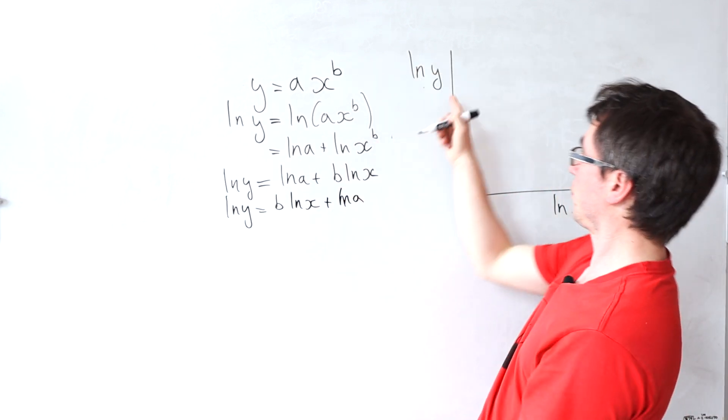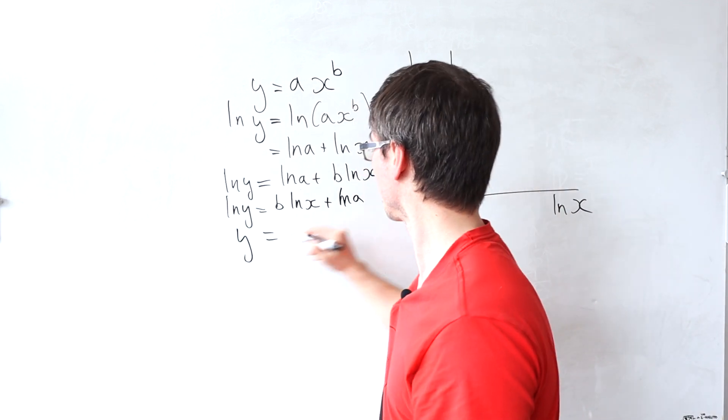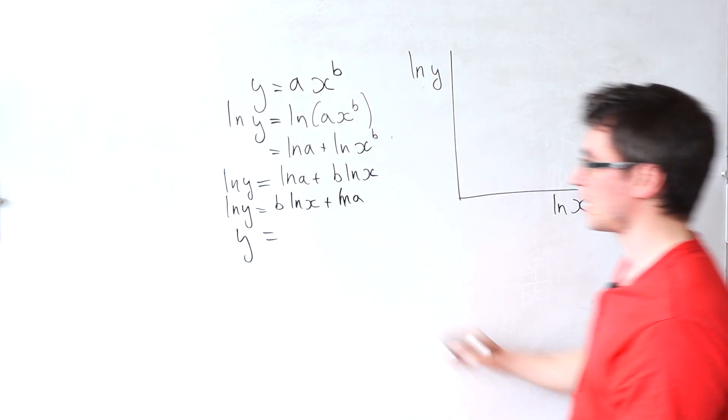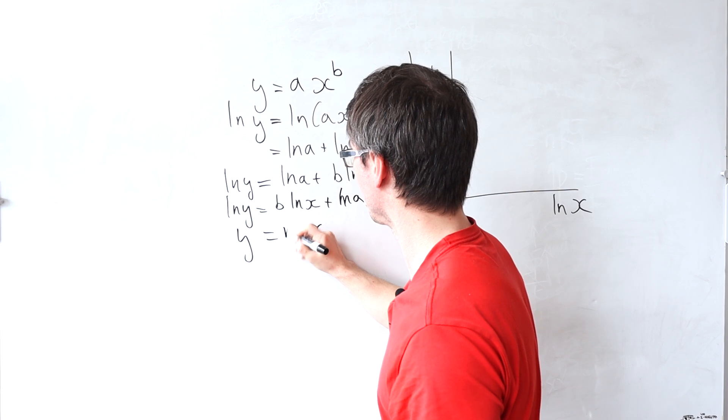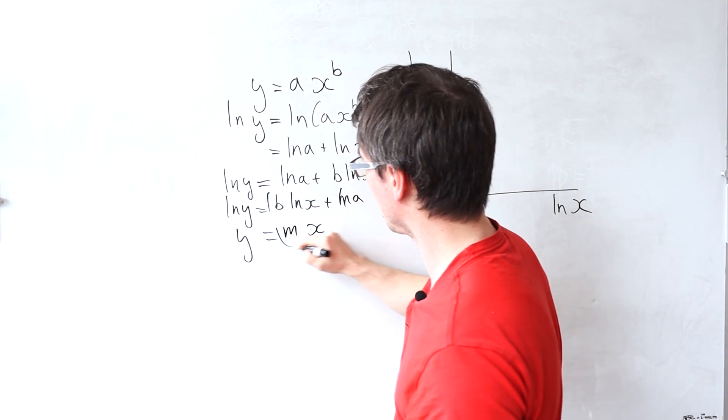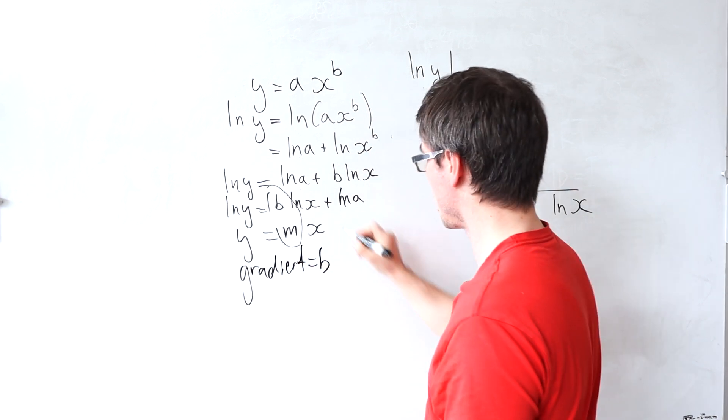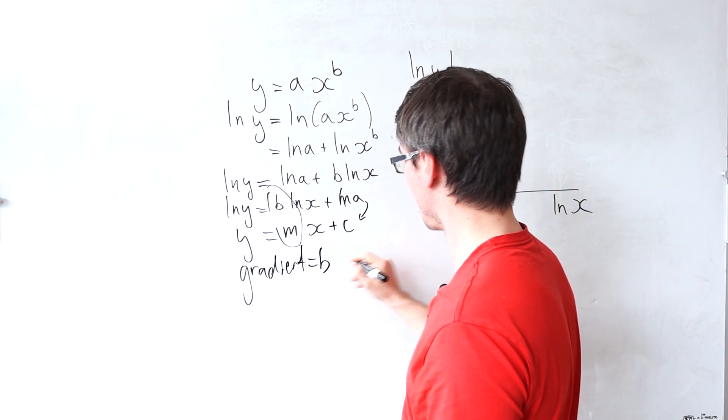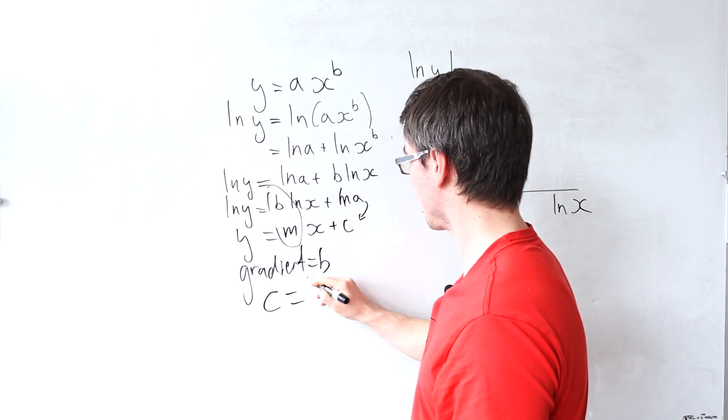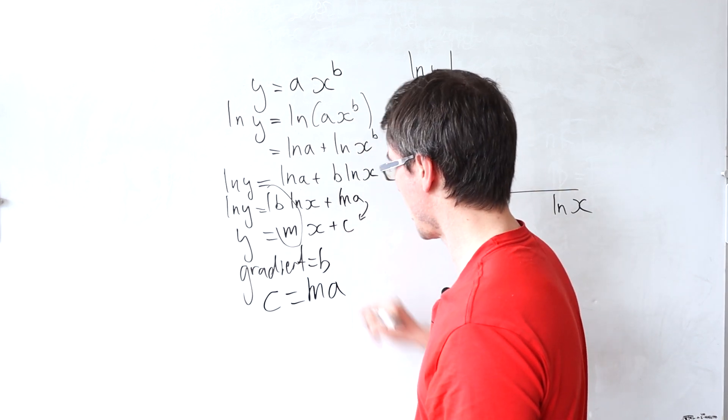Now if ln of y is on the y-axis, if ln of x is on the x-axis, we can clearly see that my gradient is equal to b and then my intercept c will be equal to ln of a.